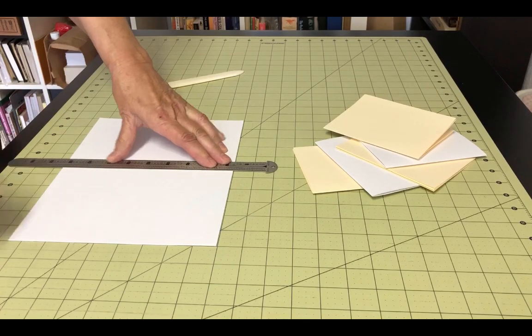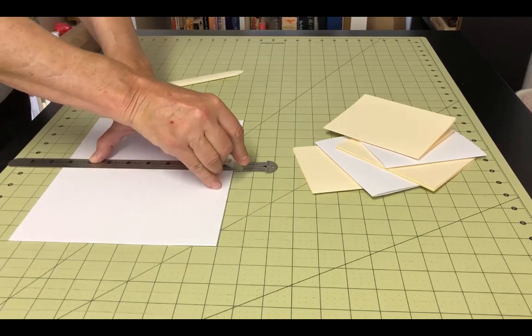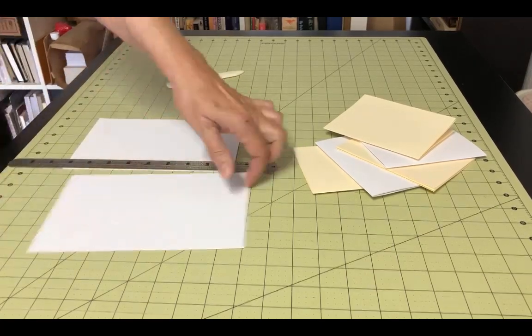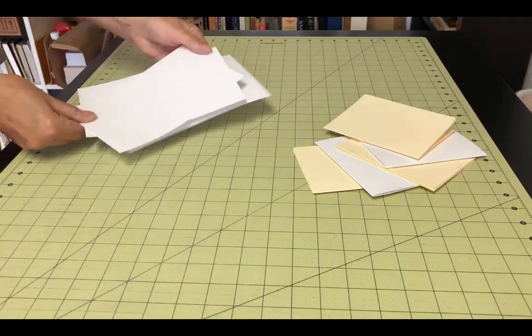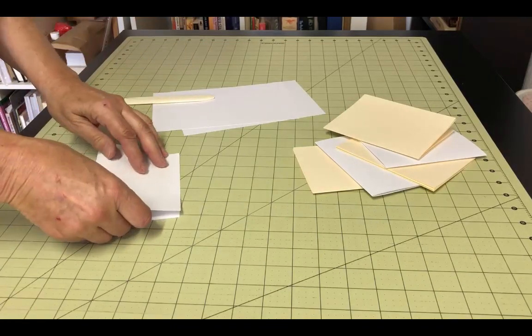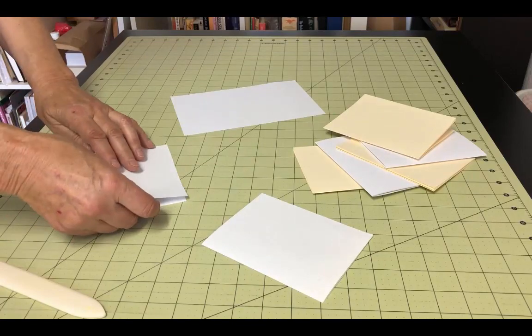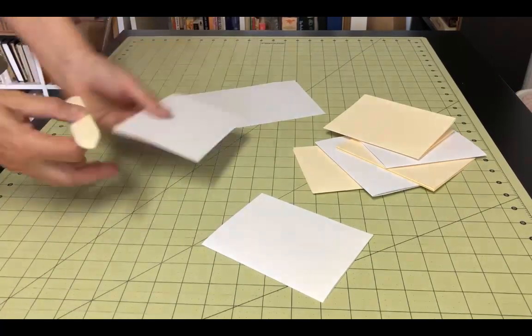First, you need to prepare the signatures. This stitch works with an even or odd number of signatures. Depending on the weight of your paper, you will want three or four pieces of paper for each signature. The paper I'm using here is cardstock, which is fairly stiff, so I'm using three pieces. Fold everything and gather the signatures together.